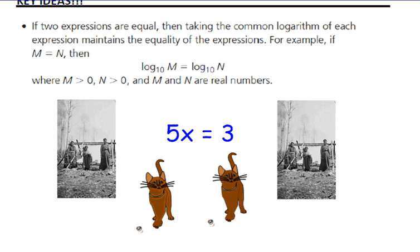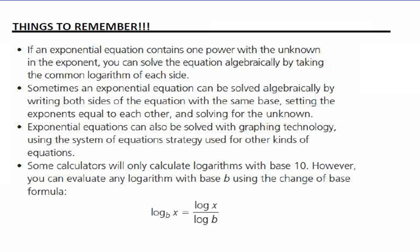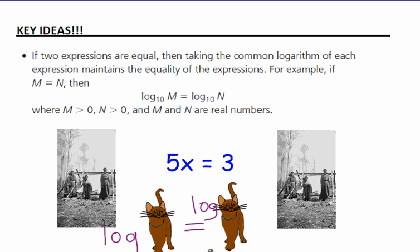So if our left side is equal to our right side, then log of our left side equals log of our right side. Log cat equals log cat. That's all we're getting at here. Things to remember: if m equals n, then this is true.